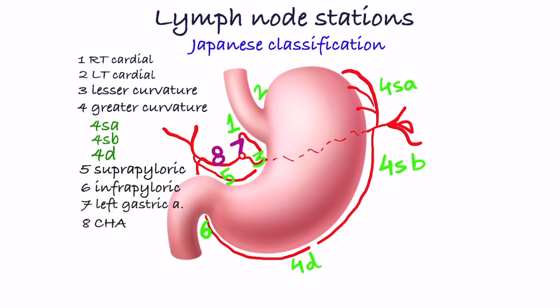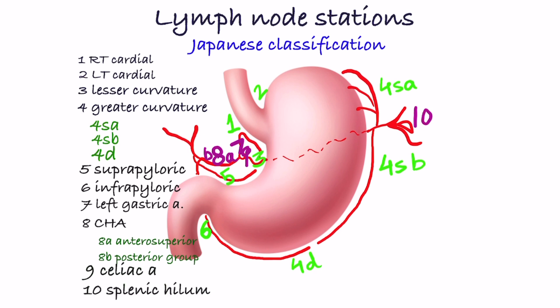Nodes 7 to 11 are along vessels. Station 7: Left gastric artery. Station 8: Common hepatic artery, divided into 8A anterosuperior group and 8B posterior group. Station 9: Celiac artery. Station 10: Splenic hilum. Station 11: Along splenic artery — 11P proximal splenic artery and 11D distal splenic artery.